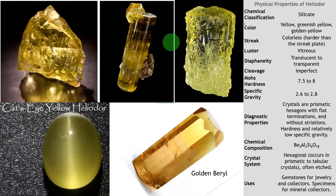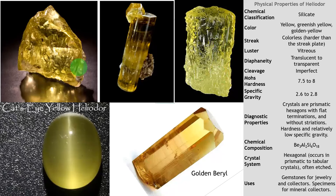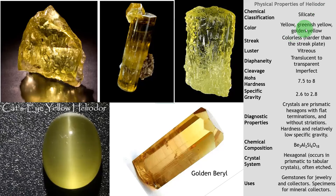Now look at the physical properties of heliodor — golden beryl. You can see the golden beryl crystal here. The chemical classification is silicate mineral. Color is yellow, greenish yellow, golden yellow, or golden berry.